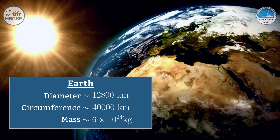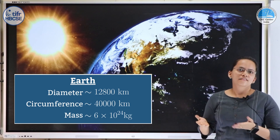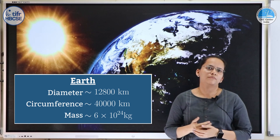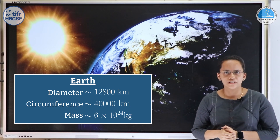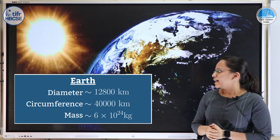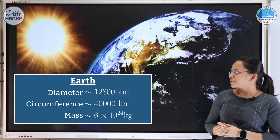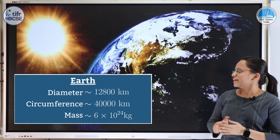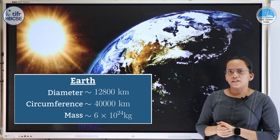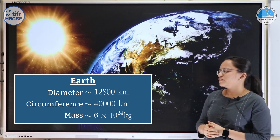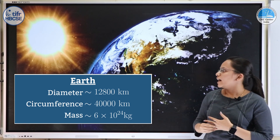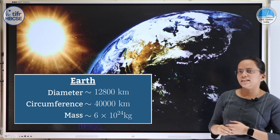The diameter of the Earth is about 12,800 km and the circumference is about 40,000 km. To get a sense of how long 40,000 km is: if we imagine travelling in a car on a highway at 120 km per hour, it would take about 333 hours, which is about 13 days, to cover that distance.